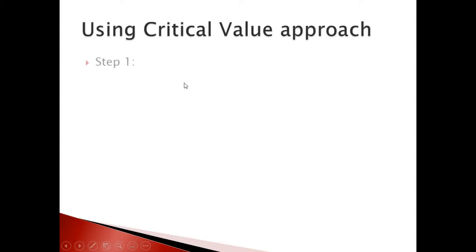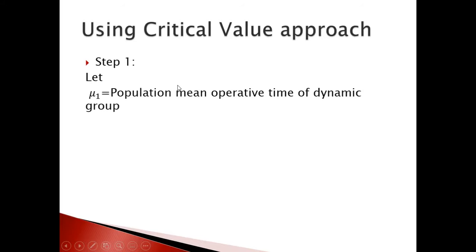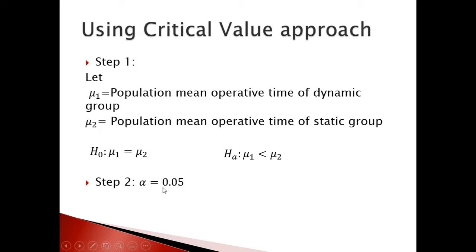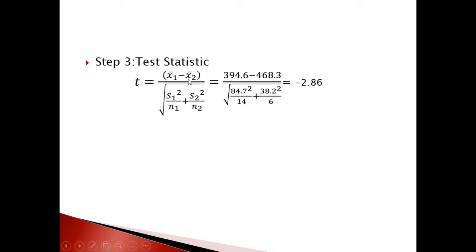Step 1: μ₁ is the population mean operative time of the dynamic group; μ₂ is the population mean operative time of the static group. H₀: μ₁ = μ₂; alternative hypothesis: μ₁ < μ₂. Step 2: alpha = 0.05. Step 3: Plug in x̄₁, x̄₂, s₁, n₁, s₂, n₂ into the test statistic formula to get t = −2.86.